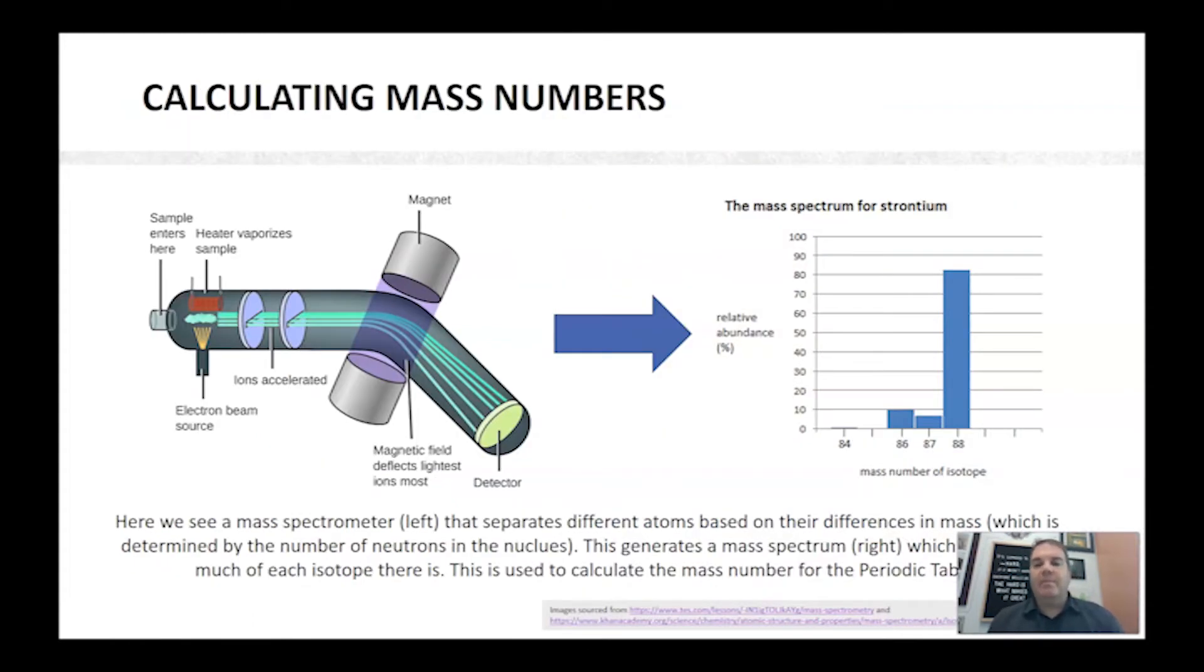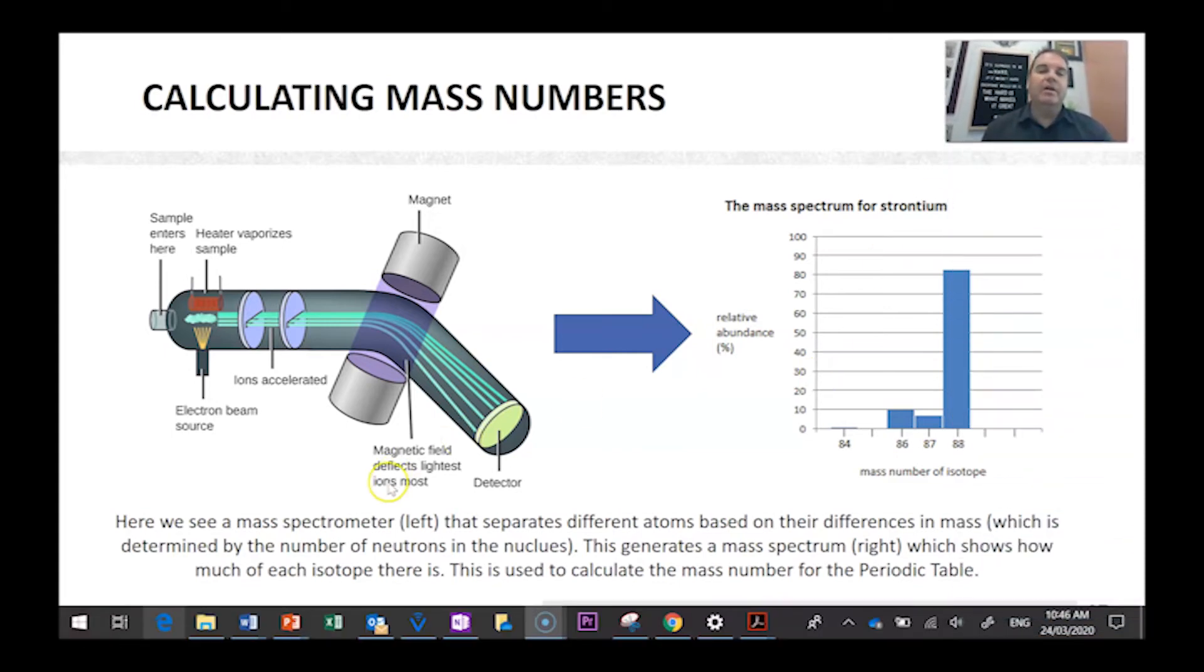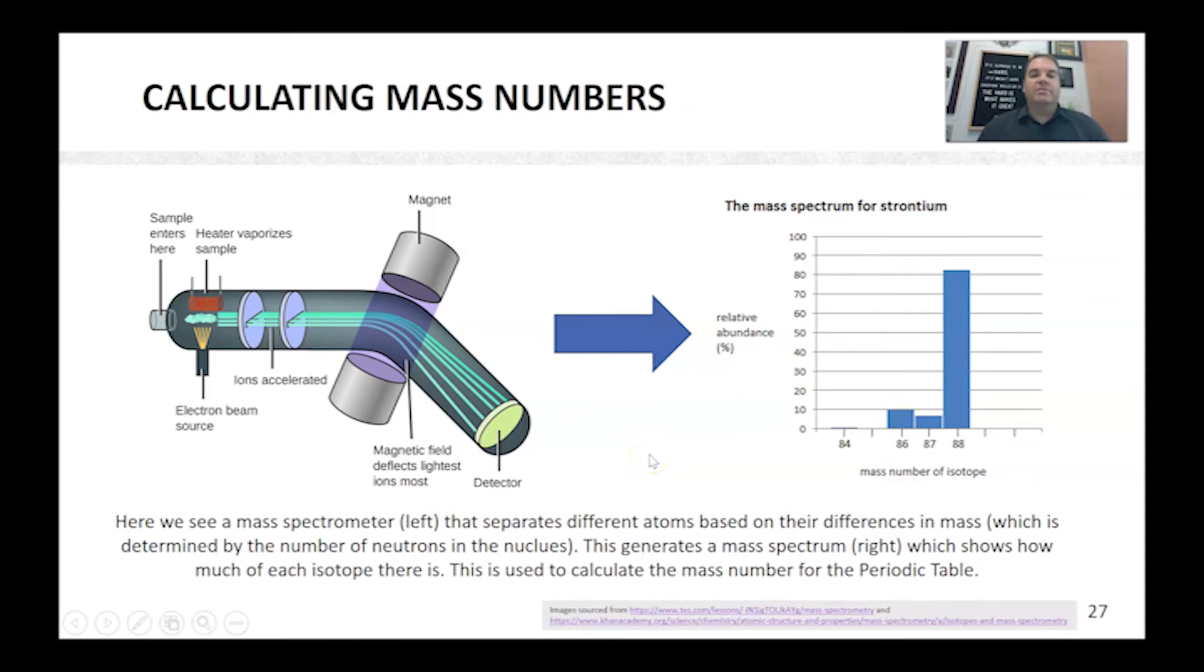So to calculate the mass number, if we have different isotopes of elements, and pretty much all elements have isotopes, there's a different percentage of those that exist in the world. So I'm going to move my video out of the way here for a sec so you can see what's down at the bottom here. So this is what's called a mass spectrometer. So these are generally quite big. They take up whole rooms by themselves. They're starting to get smaller these days though.